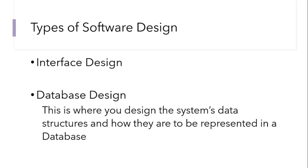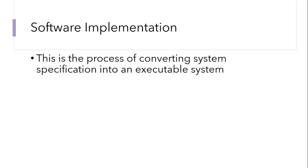Then we have database design. This is where you design the system's data structures and how they are to be represented in a database. If the system involves a database, this is where you draw your various database schemas, tables, and relationships. Note that a software is not required to have all four of these designs — some softwares are made up of only architectural, component, and interface design.